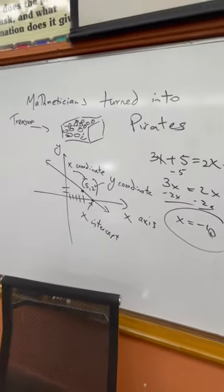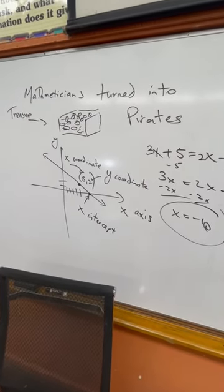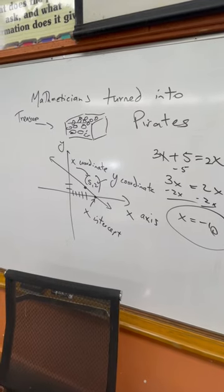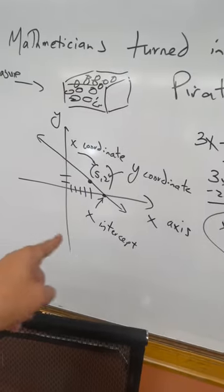There are different aspects to that. There's x-intercept which is where the line crosses the x-axis. There is the x-coordinate of a point and the x-axis which is the line, the horizontal line that goes right across.